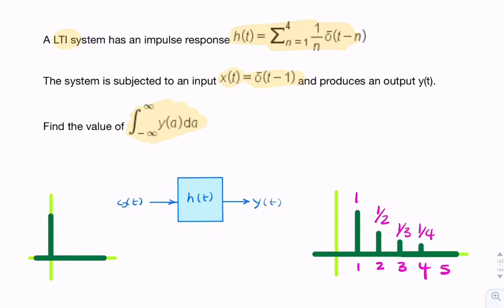Each of these will have a time of occurrence determined by this delay. When the delay is n equals 1, we have this delay here. When n equals 2, we have this impulse here, and so on.